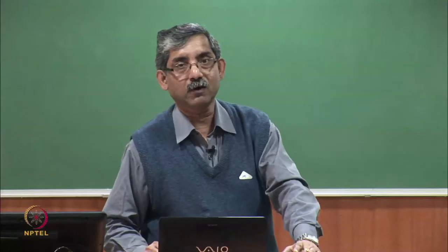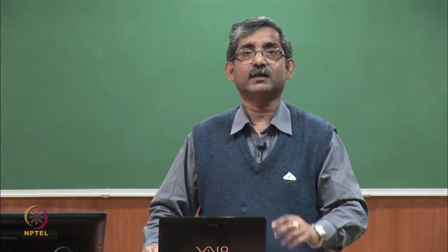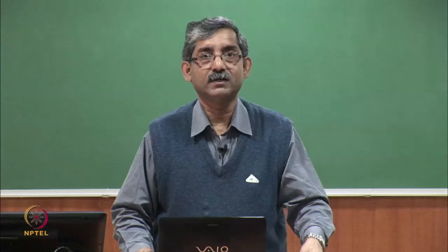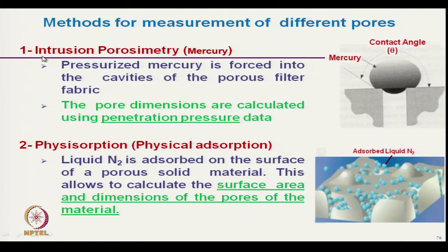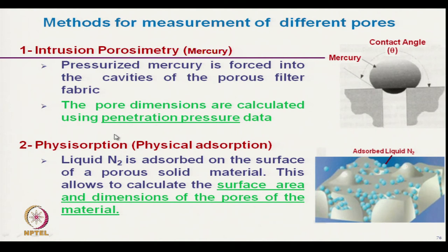The basic working principle of pore measurement is based on the capillary flow principle, used to measure the pore size distribution of filter fabric. One technique is intrusion porosimetry using mercury. Mercury at high pressure is forced into the cavity of the porous filter fabric, and depending on the pore size, the pressure will vary. For finer pore sizes, higher pressure is needed, so pore dimensions are calculated using penetration pressure data.